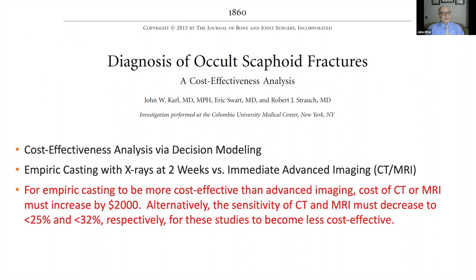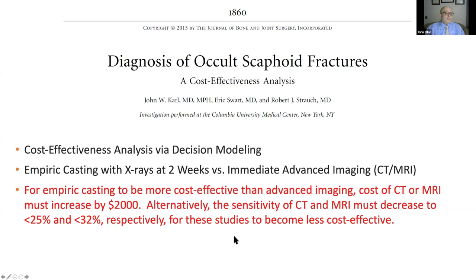A paper on diagnosis of occult scaphoid fracture found empiric casting to be more effective than advanced imaging from one perspective. When looking at cost-effectiveness, the cost of MRI would have to increase by $2,000 for it to not be worthwhile, or MRI and CT scan sensitivity would have to drop to 25% and 32% respectively. These are good studies to obtain.